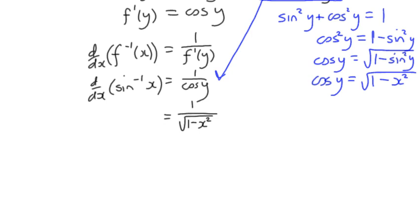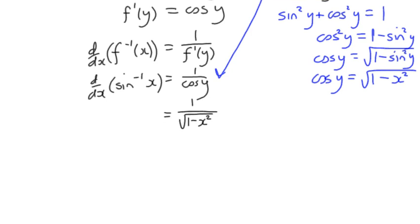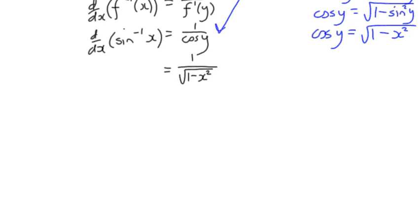So the derivative of the inverse sine of x is 1 over the square root of 1 minus x squared. And I'll just write that down.